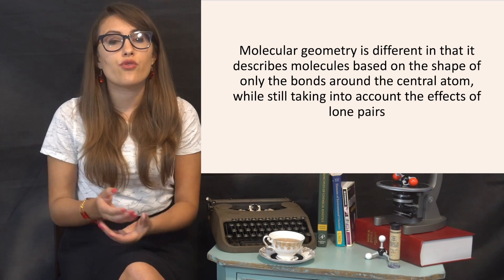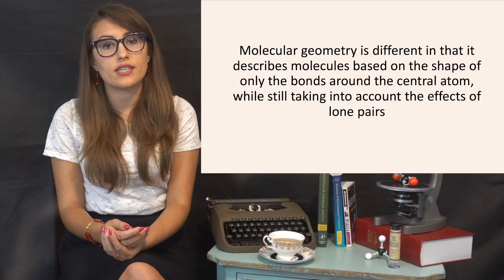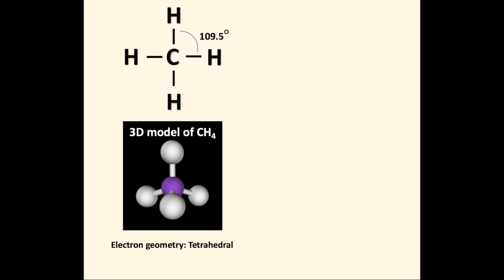We know that a molecule with four electron groups has a tetrahedral electron geometry. Now, if we only consider the bonds around the central atom, we need to consider what those groups are.